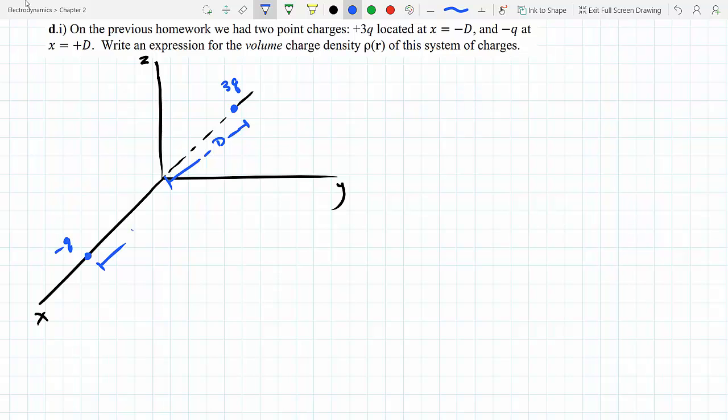Since this is a function of r, and r is a function of x, y, and z, you'd probably want a three-dimensional Dirac delta function to represent these point charges—delta cubed.